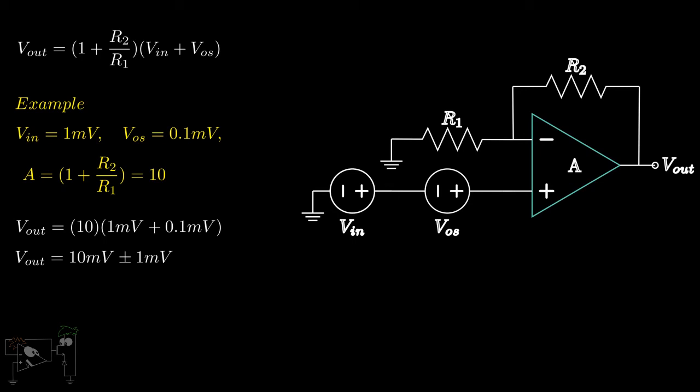Input offset voltages affect inverting amplifiers in a similar manner. As the gain of the op-amp increases, so does the offset voltage at the output, which leads to higher inaccuracies.